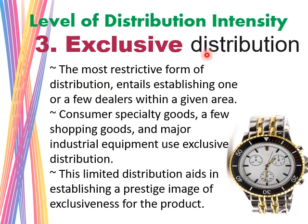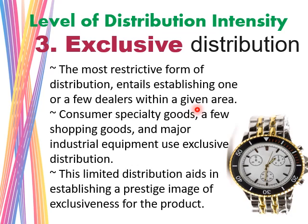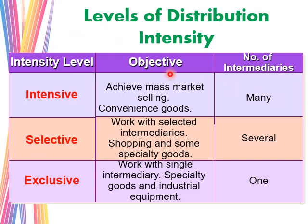Exclusive distribution is the most restrictive form, entailing one or a few dealers within a given area. Consumer specialty goods, some shopping goods, and major industrial equipment typically use exclusive distribution. This limited distribution helps establish a prestige image and exclusiveness for the product — for example, Louis Vuitton handbags sold exclusively at their own dealers, Rolex watches, and many industrial equipment manufacturers whose distributors or dealers are essentially part of the manufacturer's own network.